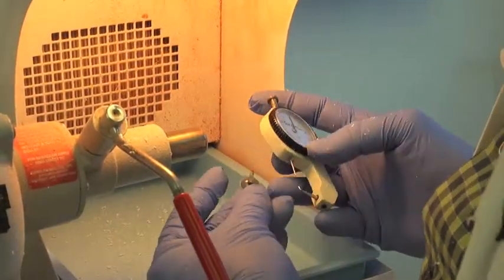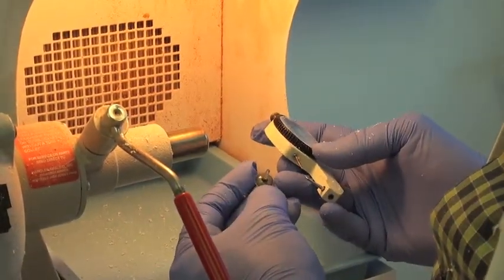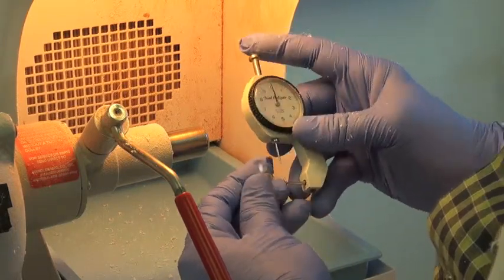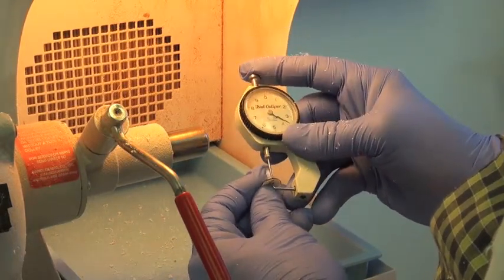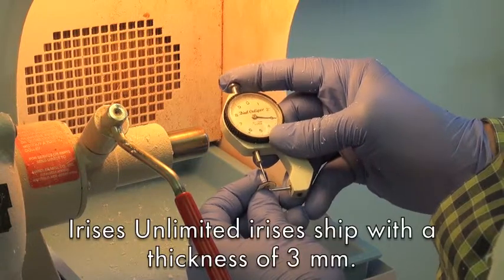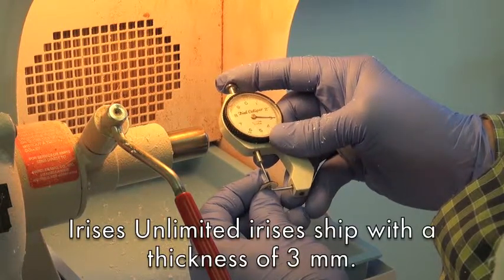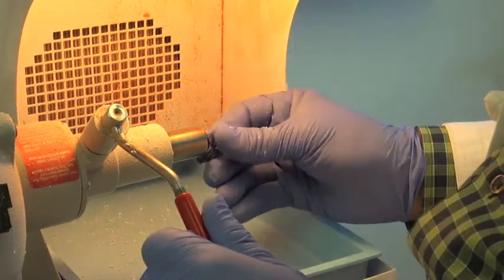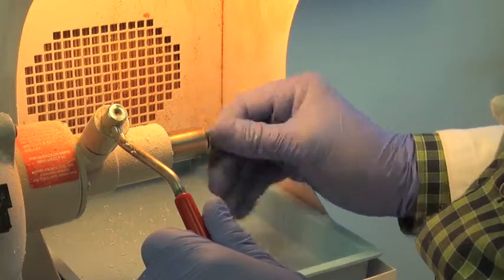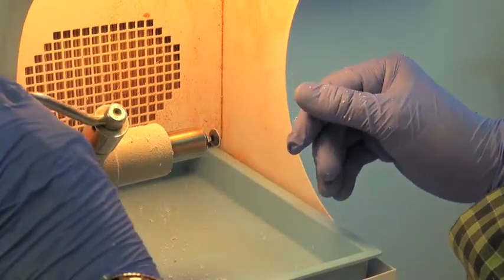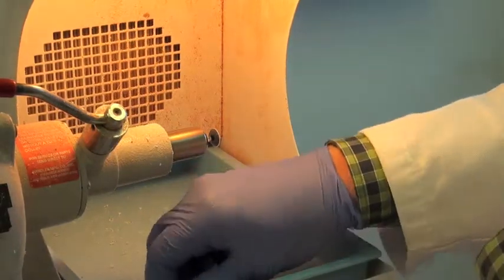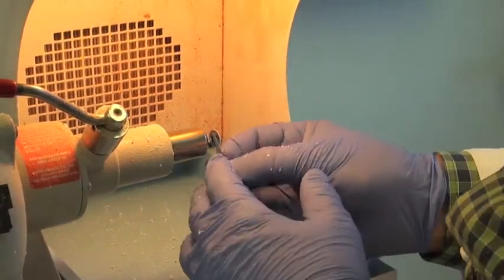This is a standard Irises Unlimited image as you will receive it as a customer. It comes to you with a thickness of three millimeters. And on the thinnest of prosthetic eyes, you may need to thin this to give yourself room to embed it in the prosthesis. And that's what I'm trying to show you is how we can adjust this and make it as thin as possible.